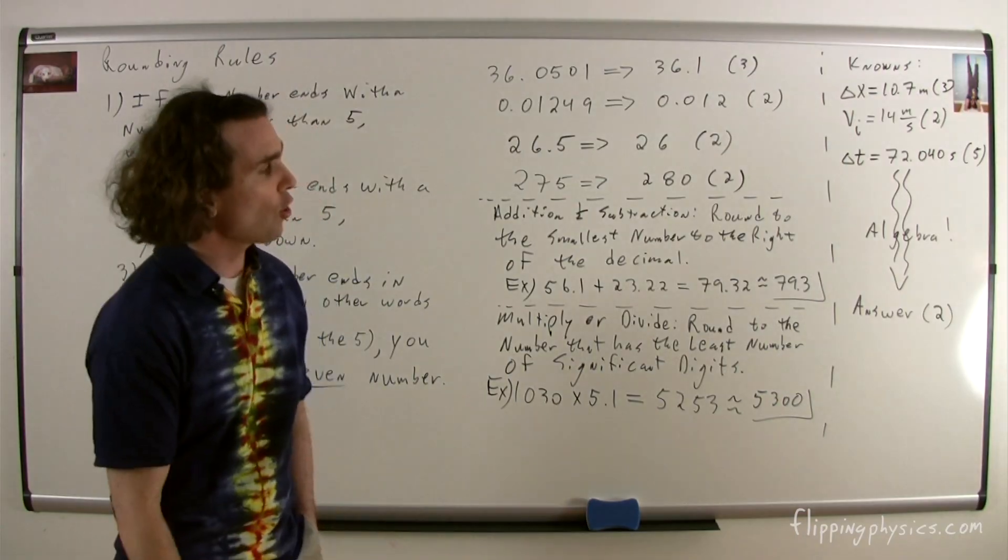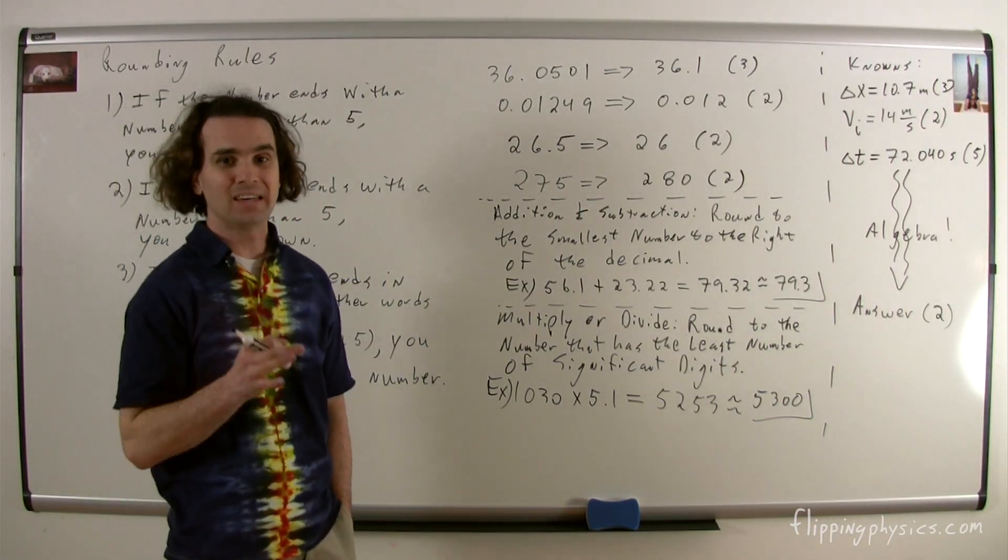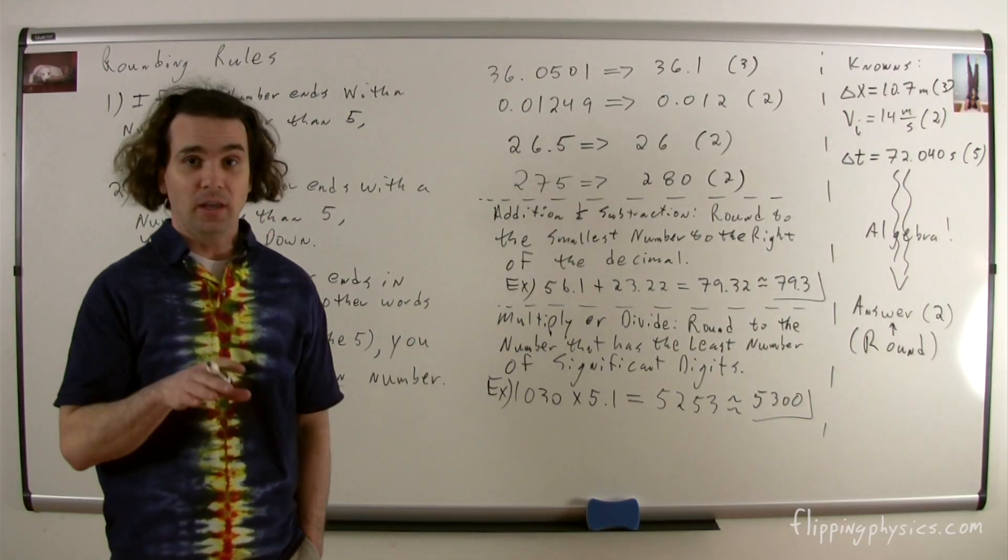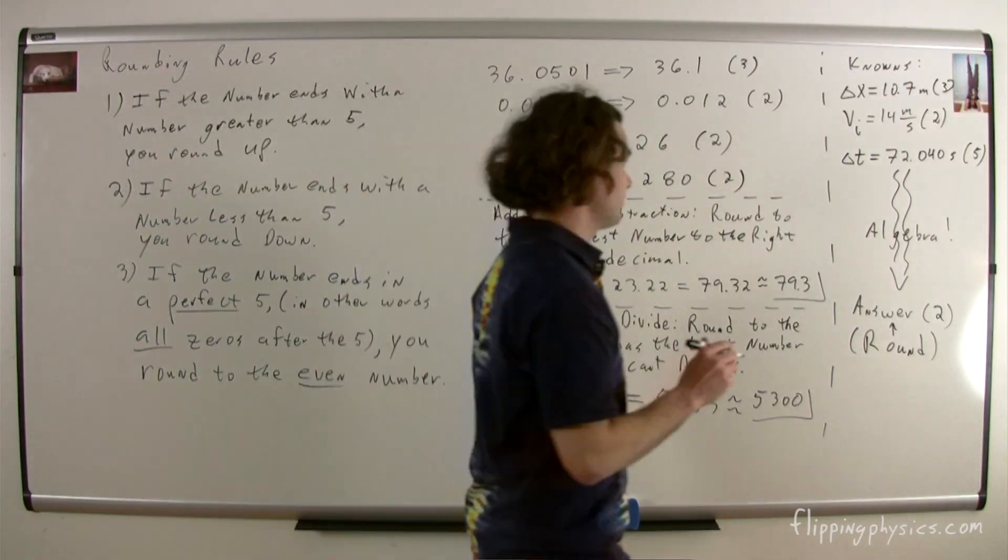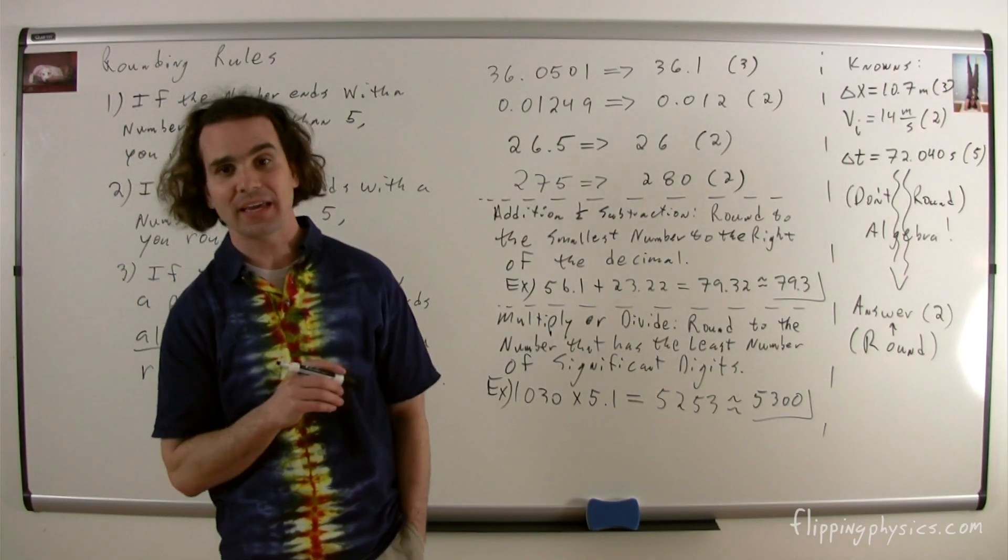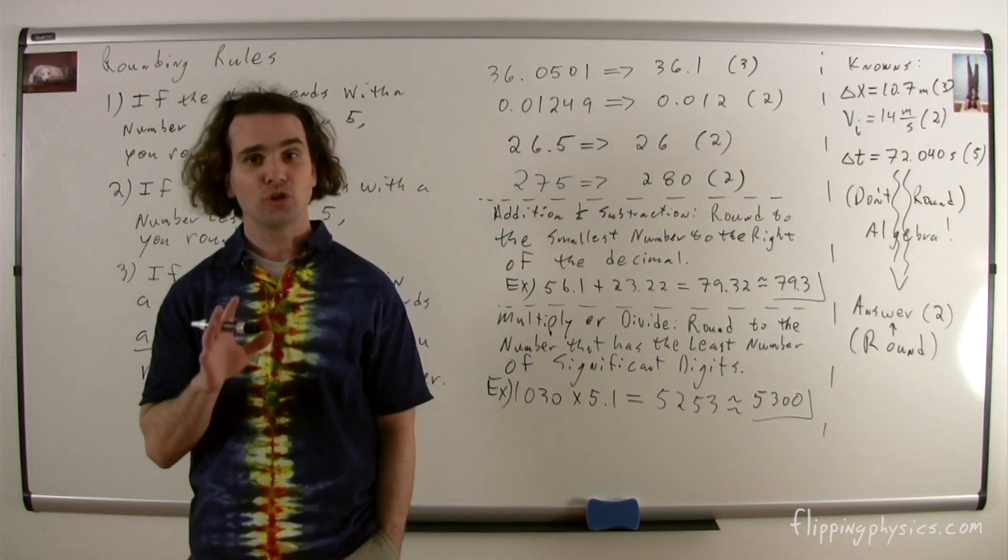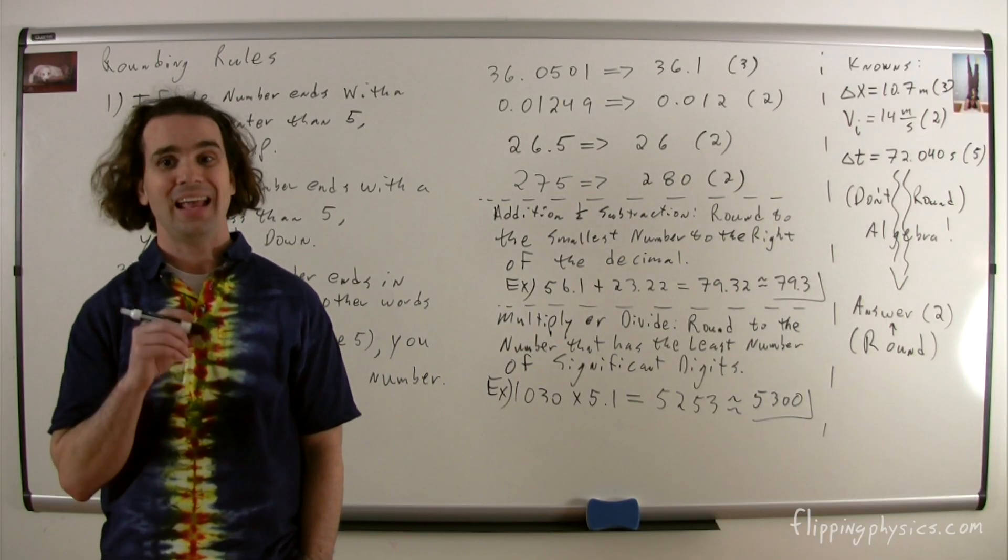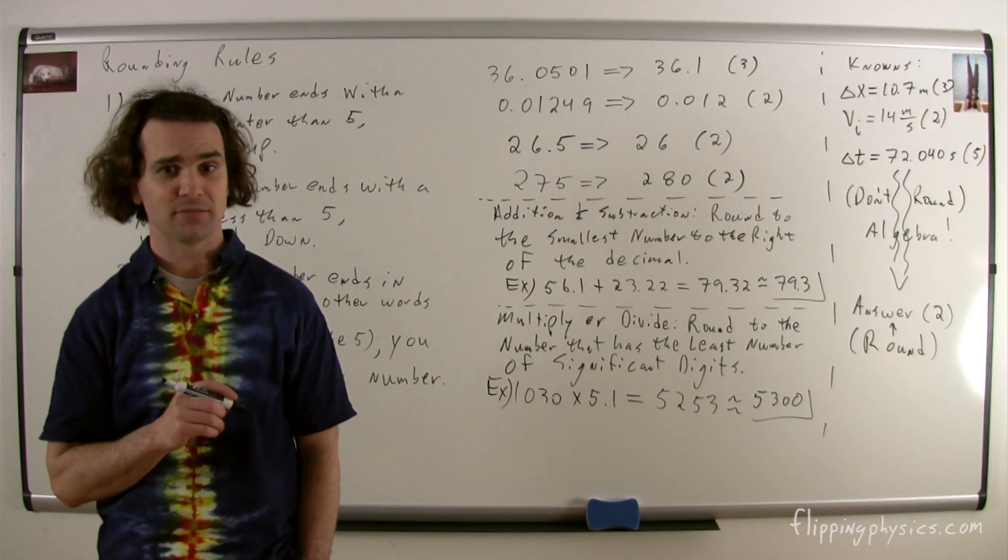Lastly, you should only round when you give an answer. You do not round in the middle of a problem. In fact, if part b of a problem uses the answer from part a, you should use the unrounded answer from part a to solve for part b, and then round the correct number of significant figures.